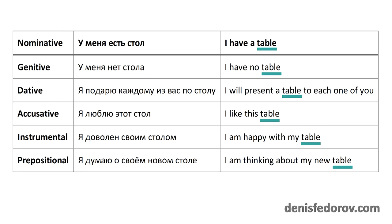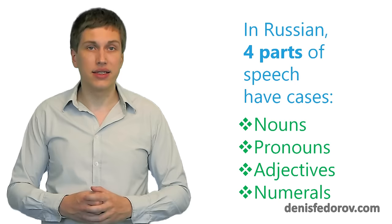But in Russian the situation changes dramatically. The word table changed its ending four times. Two times it didn't. That's why we need to learn cases in Russian. Because in Russian we use cases everywhere and a lot. I mean in every sentence. And in different cases, the words have different endings.